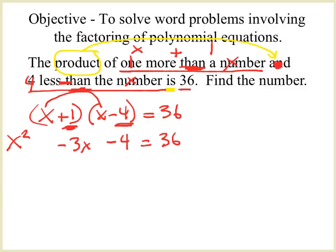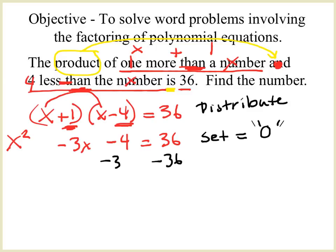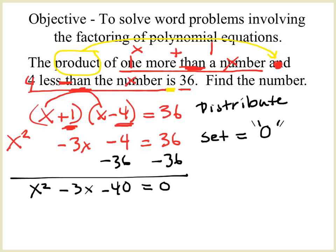Step one, I'm distributing. Step two, set it equal to zero. In order to do that, I'm going to have to subtract 36 from both sides. And now I'm left with X squared minus 3X minus 40 equals zero. Now I'm ready to factor again.